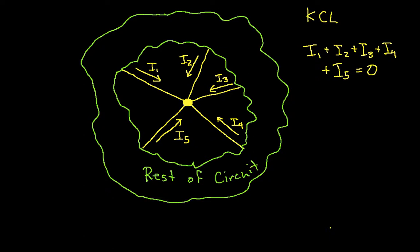And conceptually what this means is that the current, which again is flowing charge, into the node is the same as the current out, which means that as much charge flows in as flows out, so I don't have charge accumulating at a node. That's basically what we're saying with KCL.